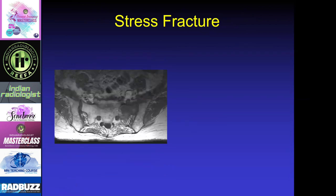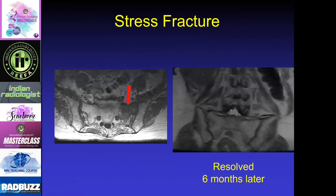This case can be pretty concerning. On the T1-weighted image we see an area of marrow replacement within the left sacral ala that looks as dark as skeletal muscle, suggesting something is replacing the marrow. But this was really just a case of a sacral ala fracture. We were worried about this, repeated an MRI six months later, and that area looks completely normal — it resolved.